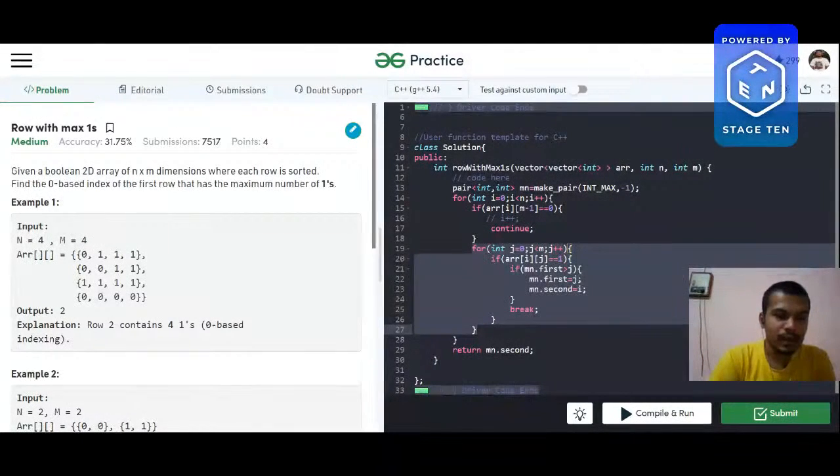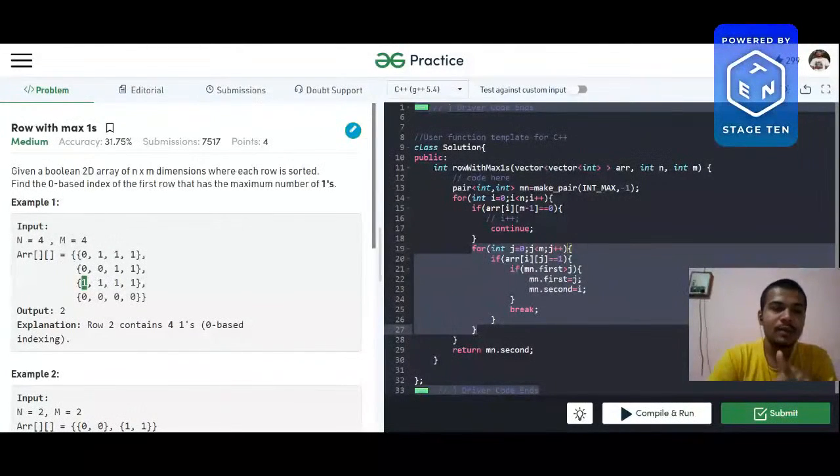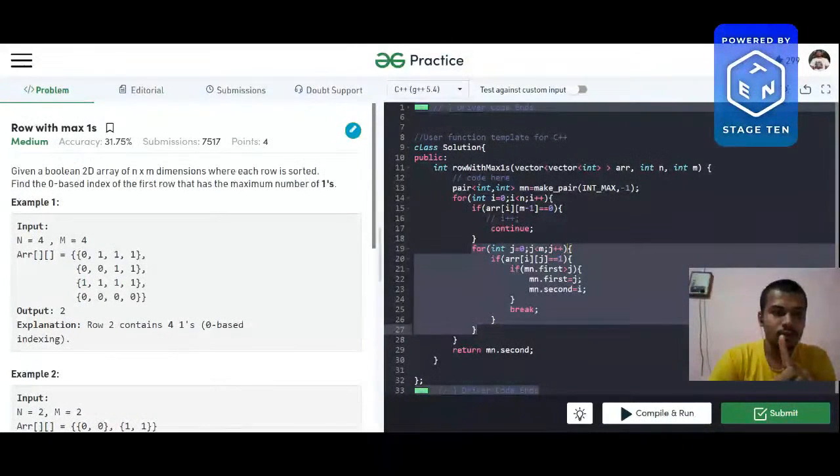And our previous minimum index was one and now it is two. So we don't want to be changing it because we want the minimum one. And we break the inner loop and come to the outer loop. Now look at this row. The occurrence of one, the first one is at index zero, and zero is indeed less than one. So we assign our minimum column index zero and our row, the wanted row, is two.